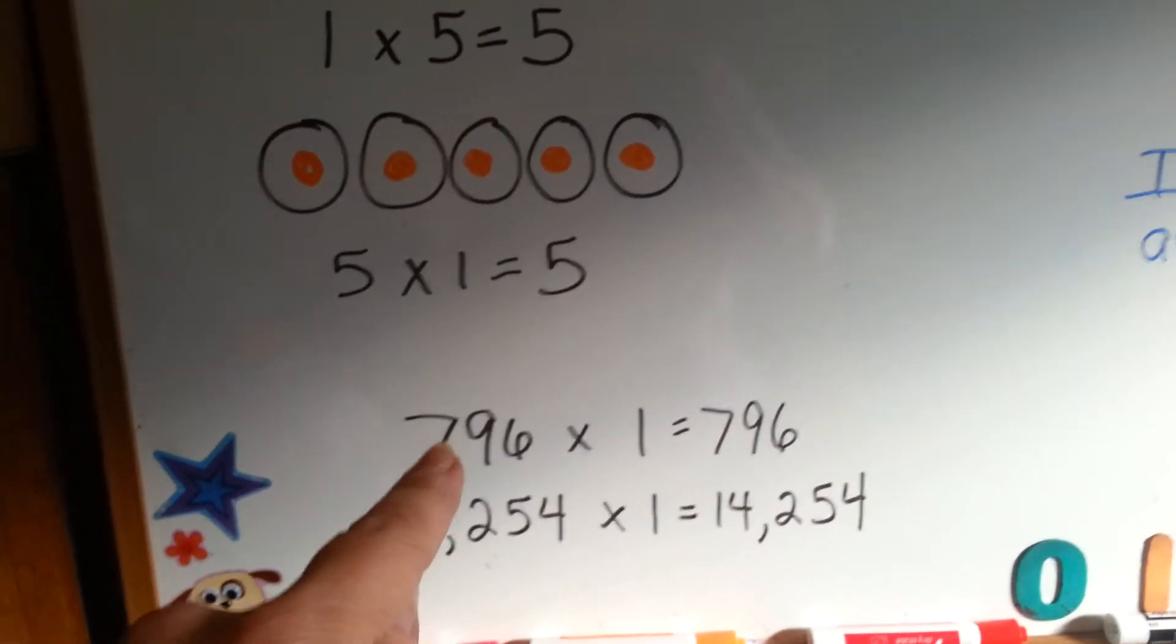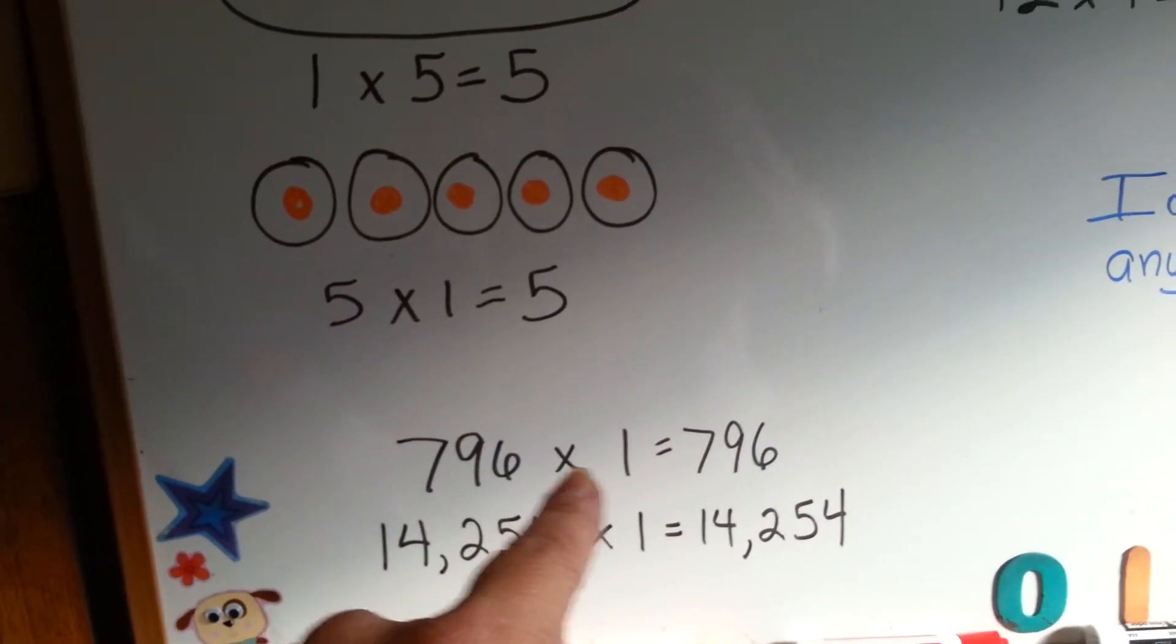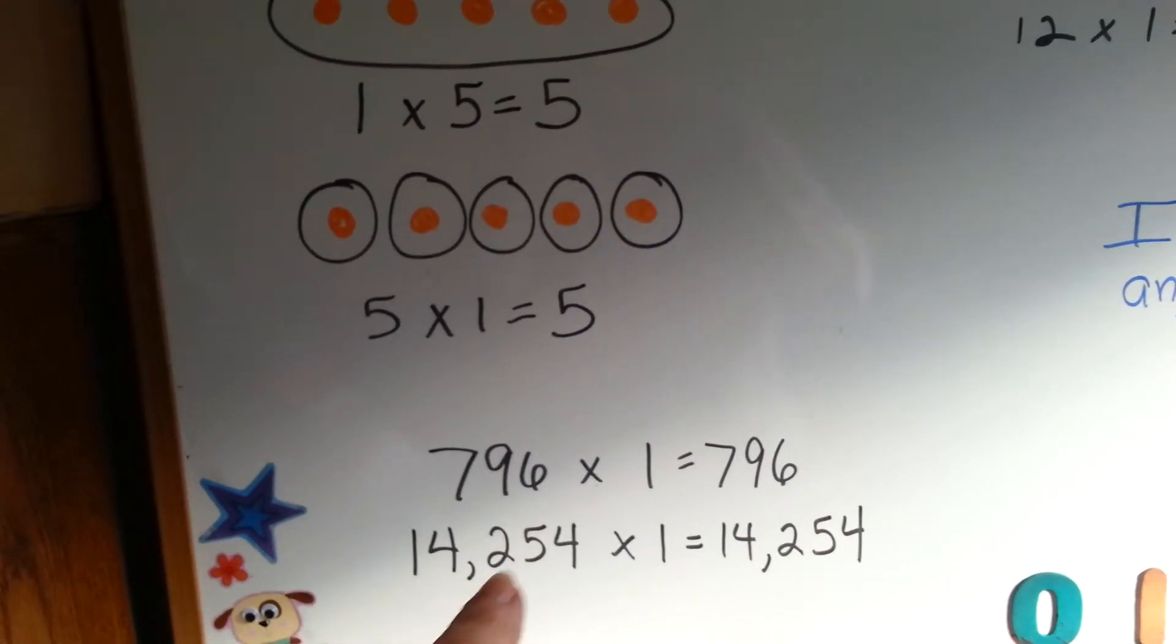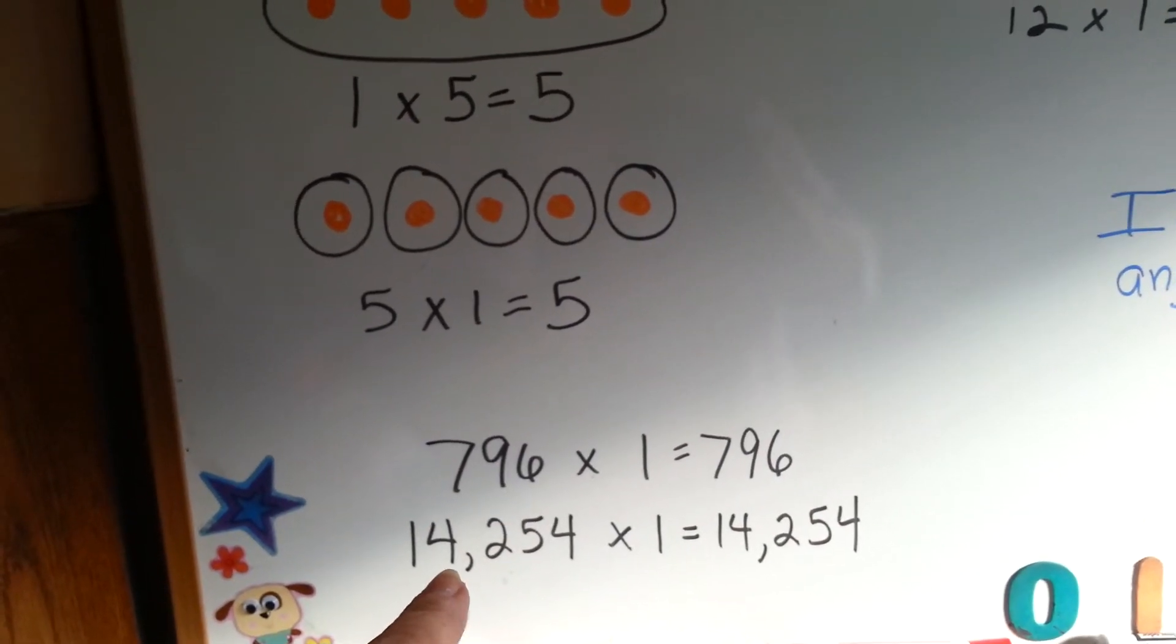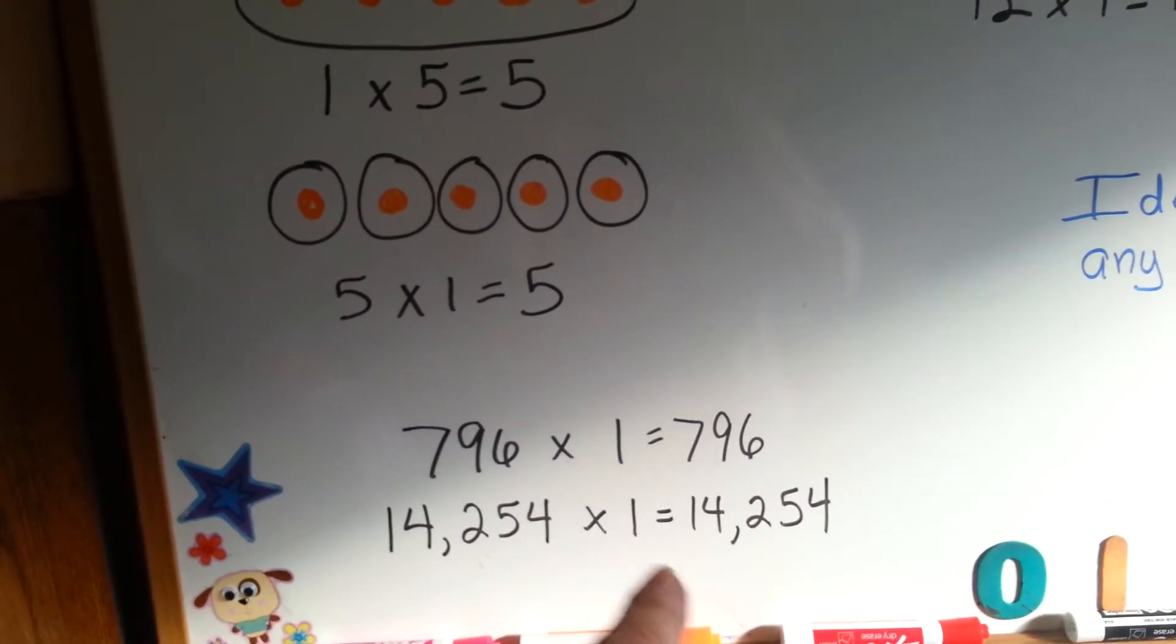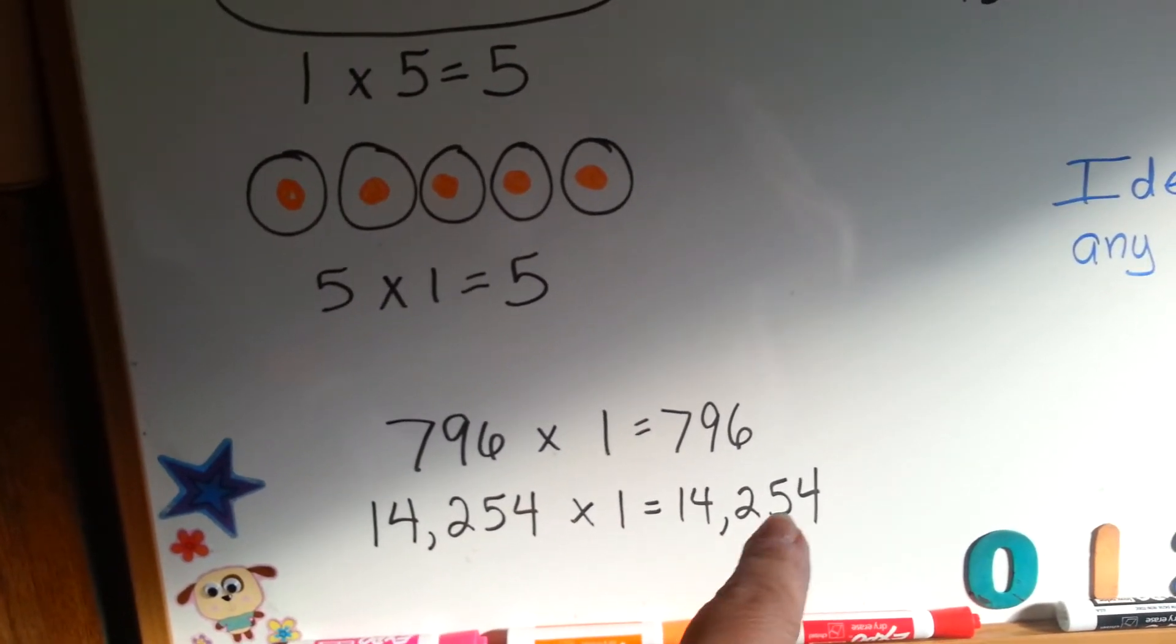Look at this. Seven hundred and ninety-six times one is seven hundred and ninety-six. It stays who it is. Even a big number like fourteen thousand two hundred and fifty-four, if you multiply it by one, it's still fourteen thousand two hundred and fifty-four.